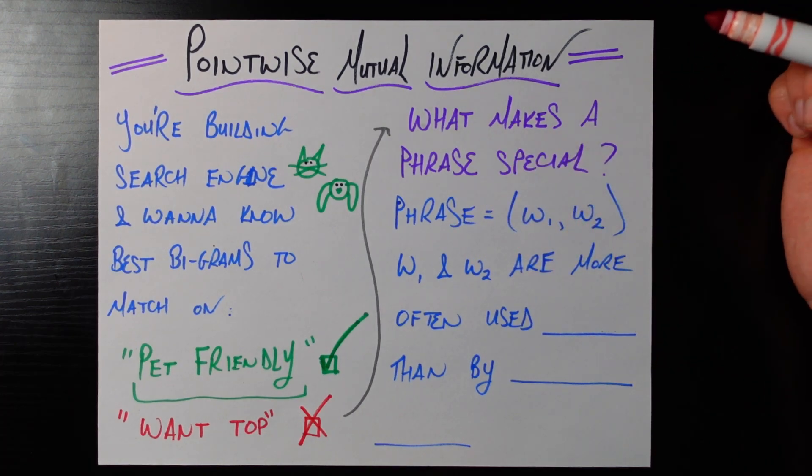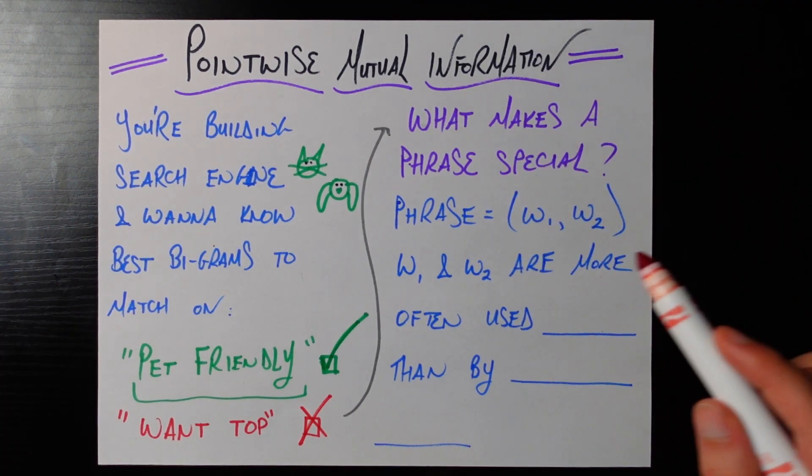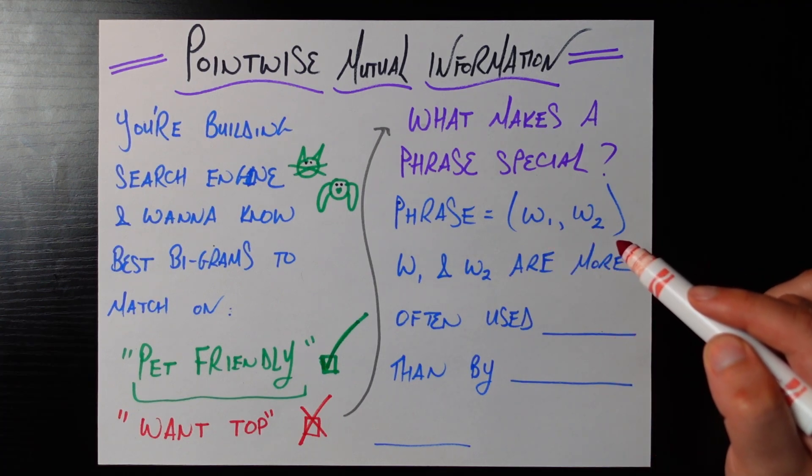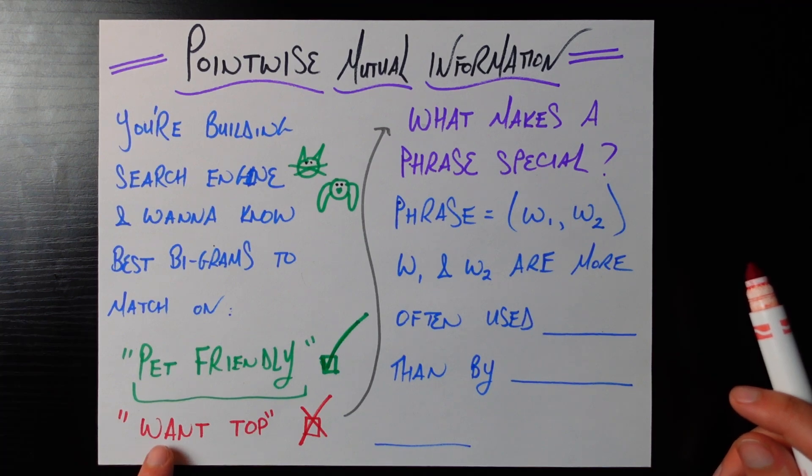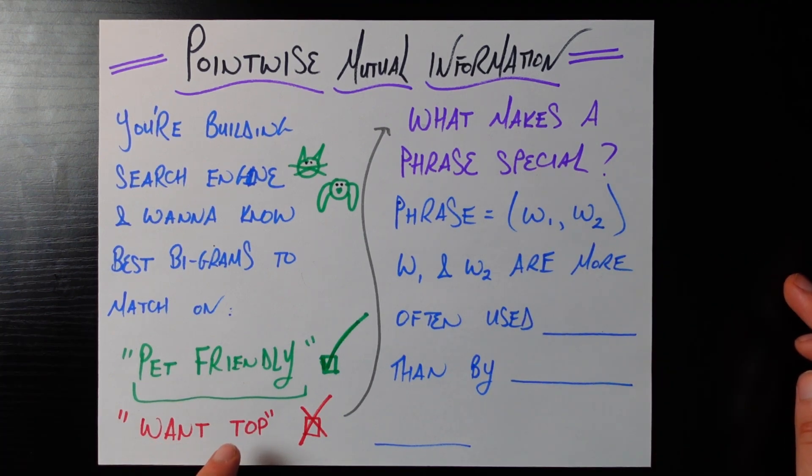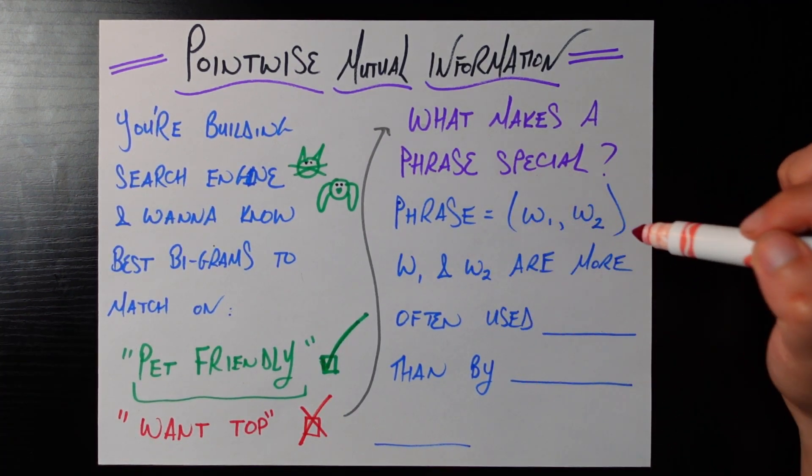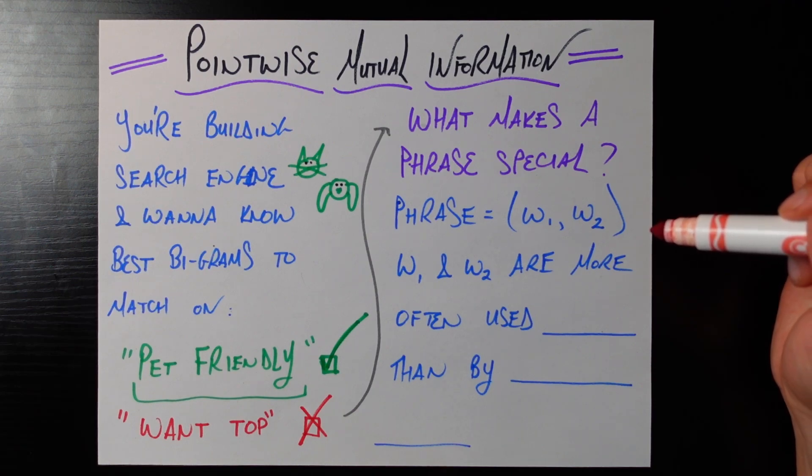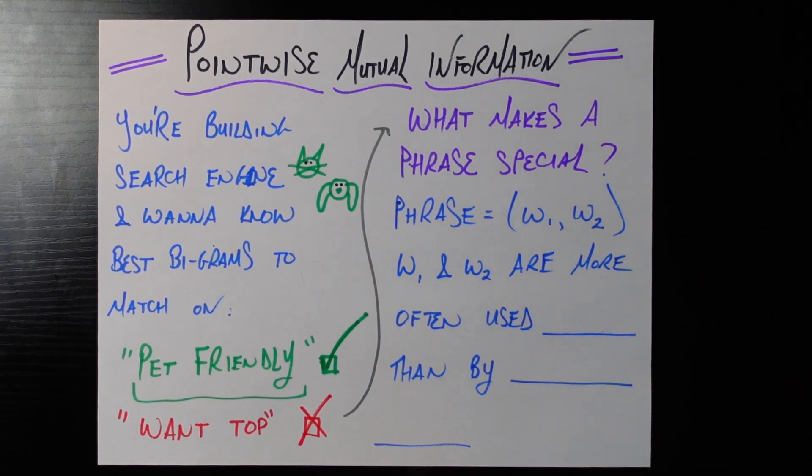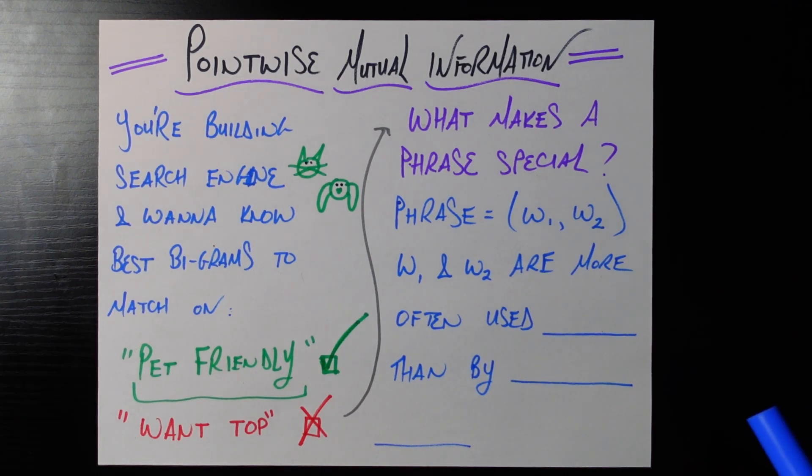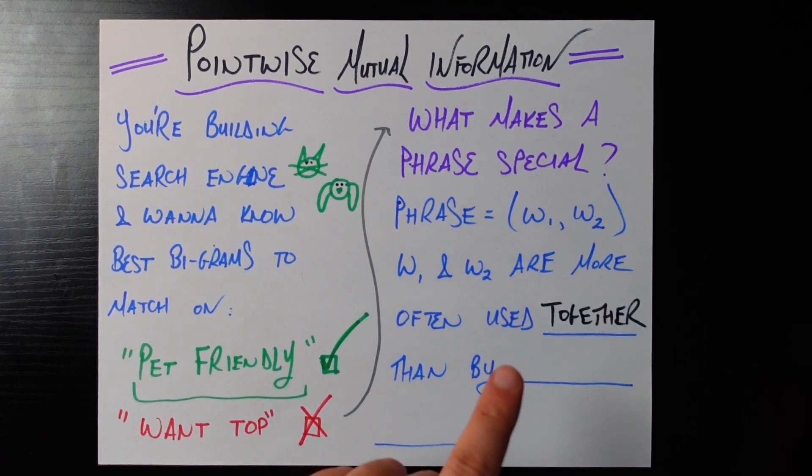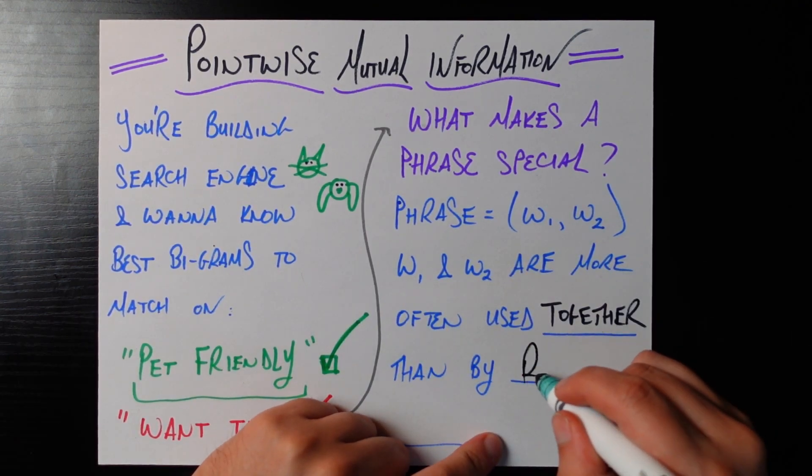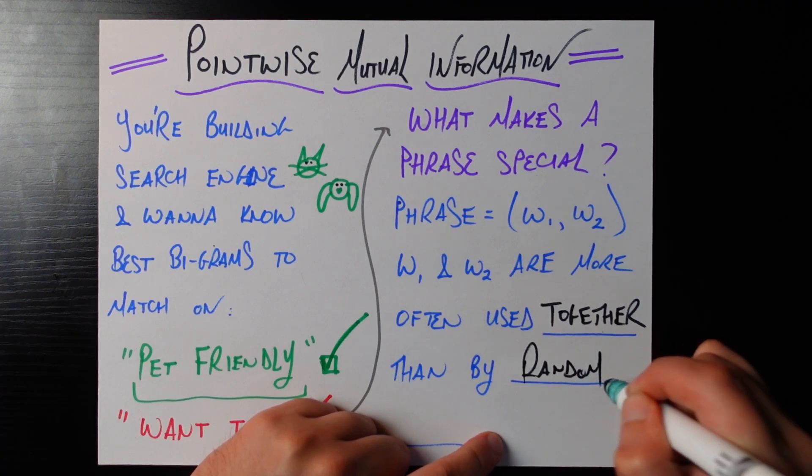So phrase here we're simply defining as just two words in this order w1 and then w2. Here we had w1 is pet and w2 is friendly or w1 is want and w2 is top. Well what makes this a phrase rather than just a collection of two random words? And I would say and the concept of pointwise mutual information would say that it's a phrase if w1 and w2 are more often used together than by random chance.